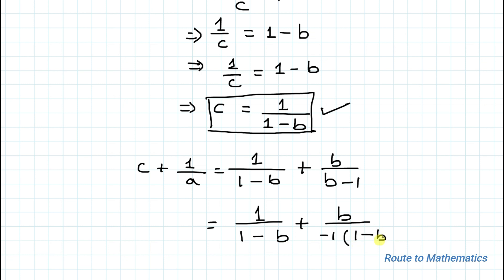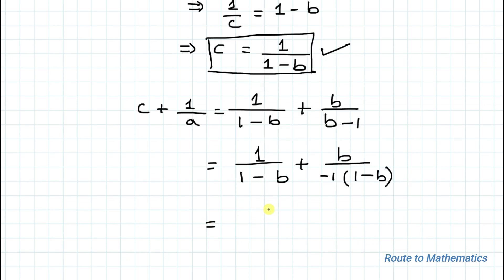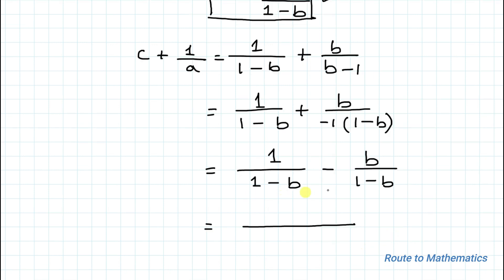So I can write it as (1 + b)/(1 - b) directly. Wait, actually we have 1/(1 - b) minus 1/(b - 1), which becomes (1 - b)/(1 - b). Both the numerator and denominator are the same, so we can directly cancel it out. So our answer is 1.